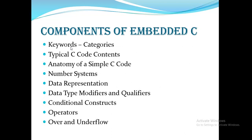Embedded C has keywords — predefined identifiers for special purposes — categorized as data types, modifiers, qualifiers, loops, jump statements, decisions, and storage classes. The contents of a C code segment include documentation, preprocessor directives, file headers, the start and end of the program, program termination statements, and comments.